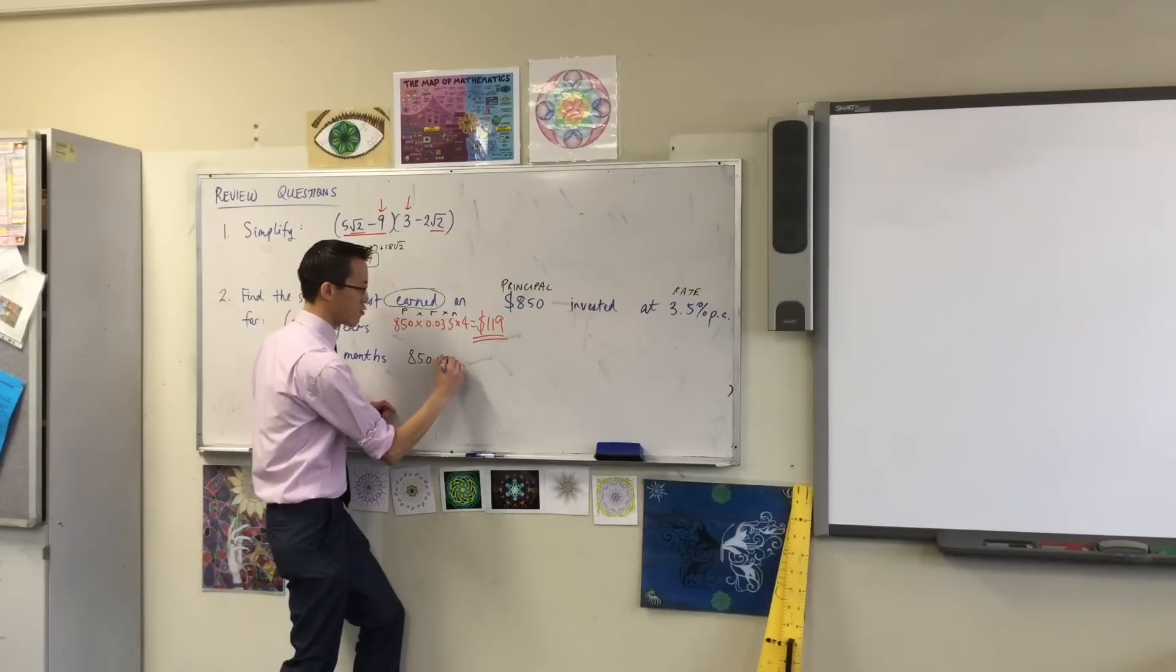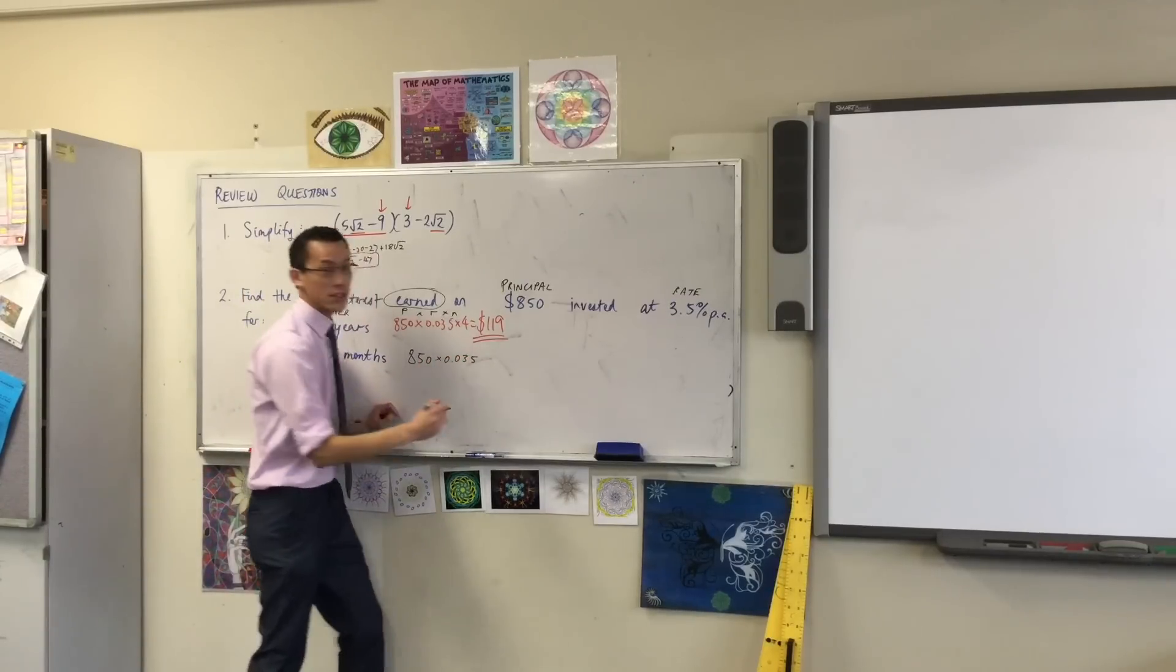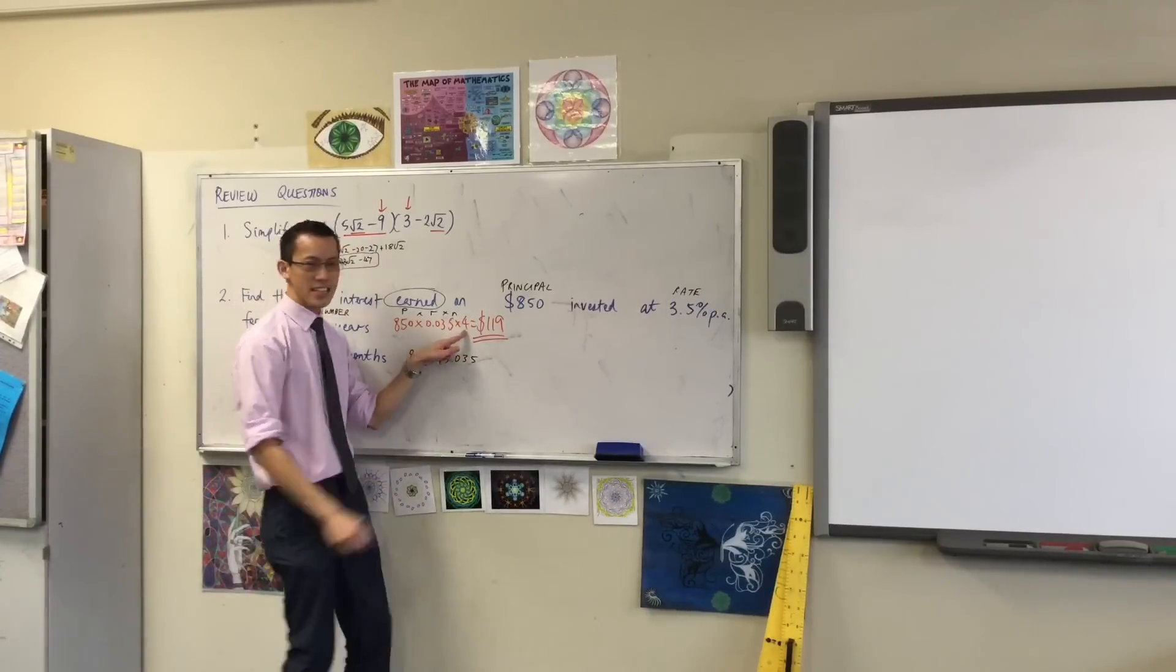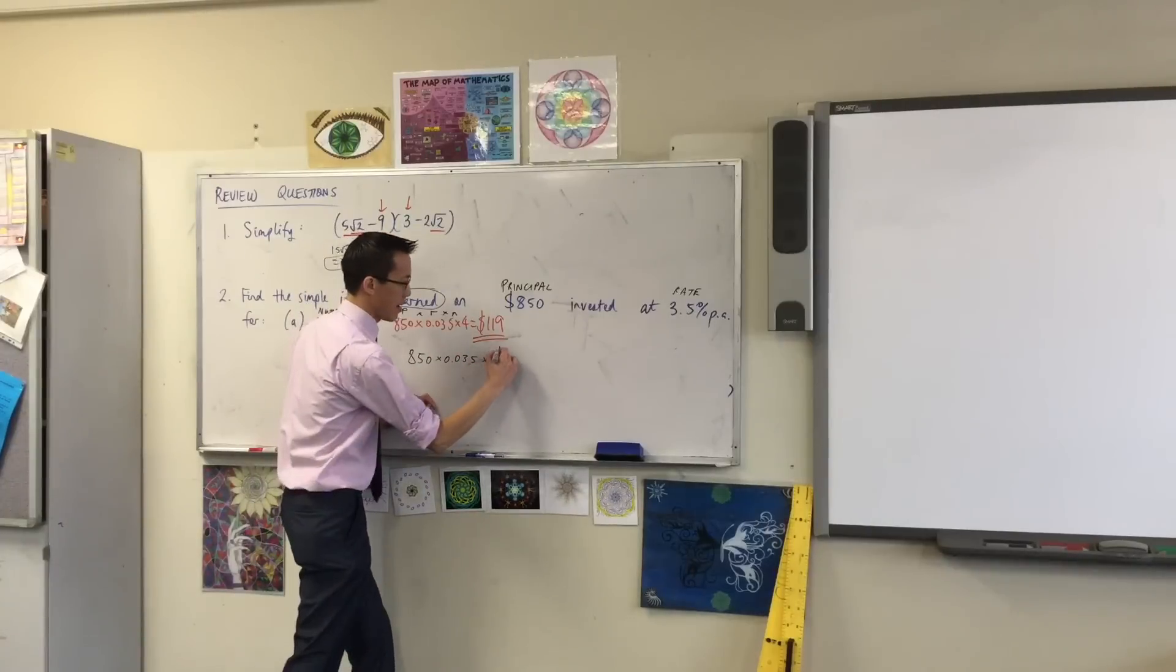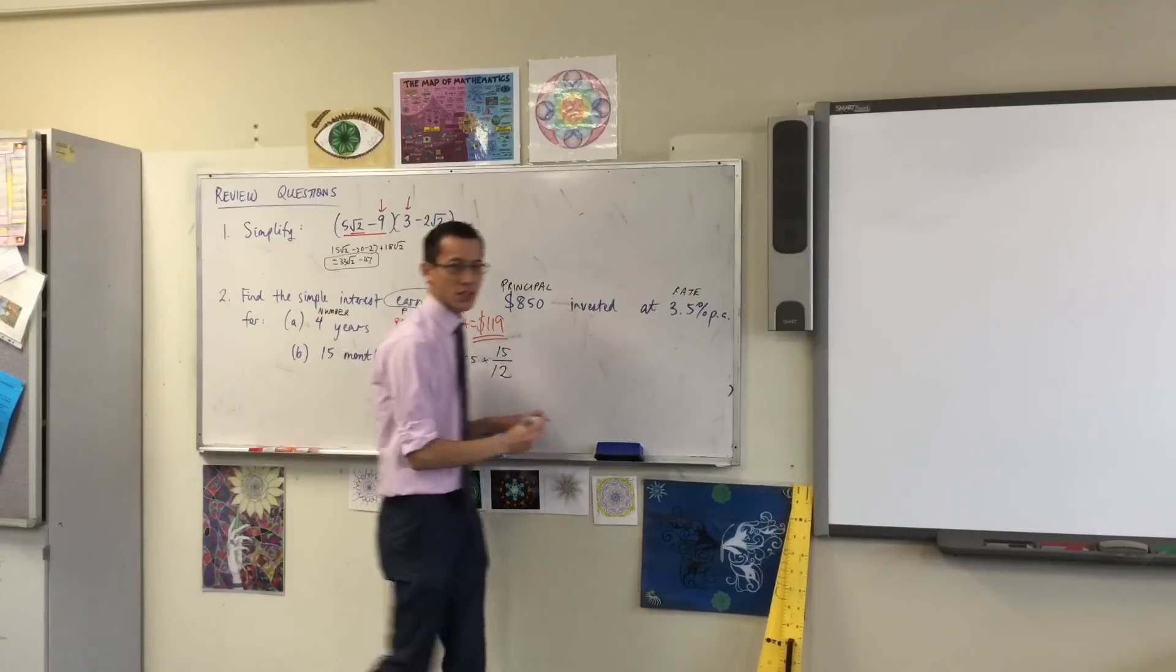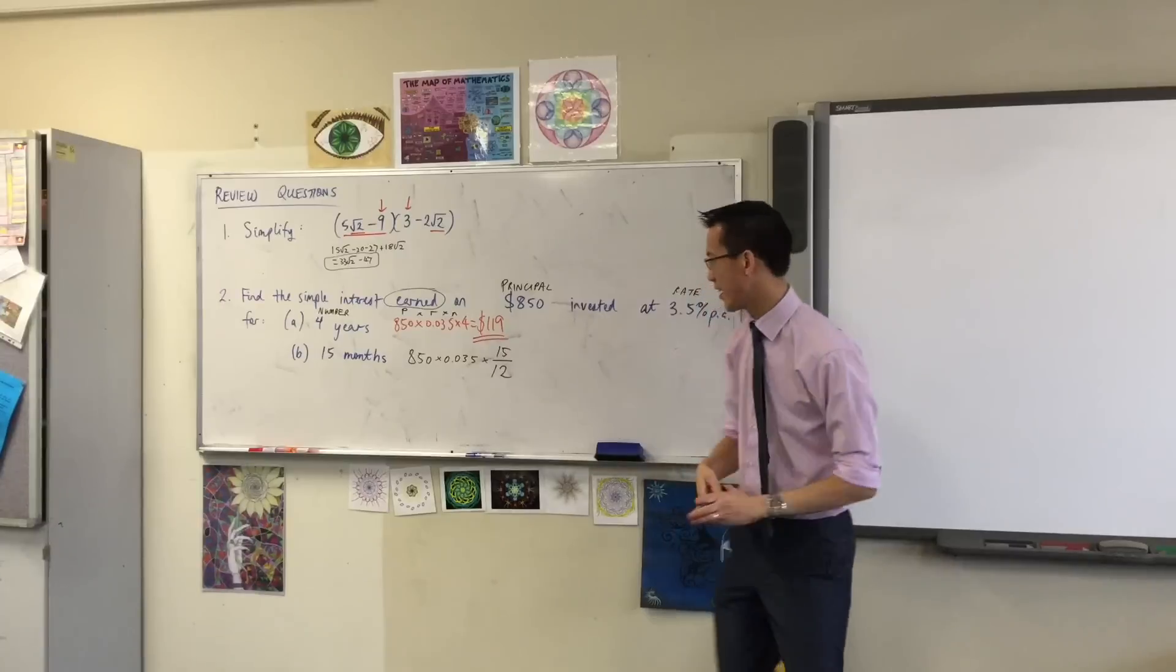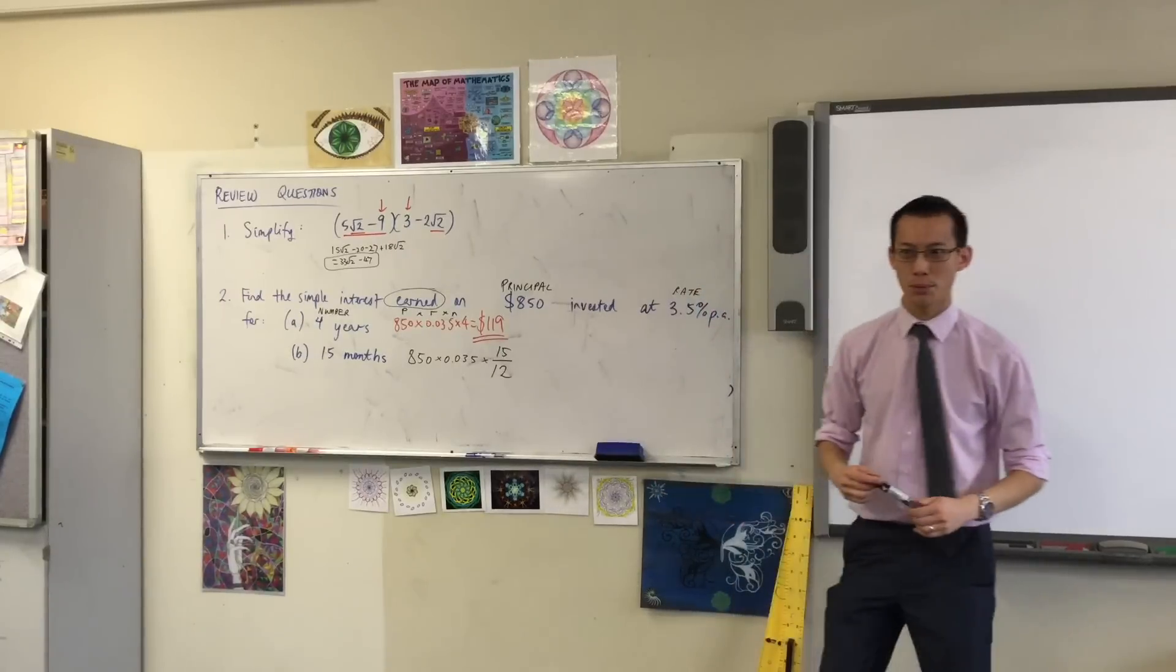Okay, so Ryan suggested that the 850 is going to stay the same, the 0.035 is going to stay the same, and it's this part that changes. Now he suggested 15 over 12. I wonder if someone else could suggest why that's a helpful thing to put in there. Yeah.